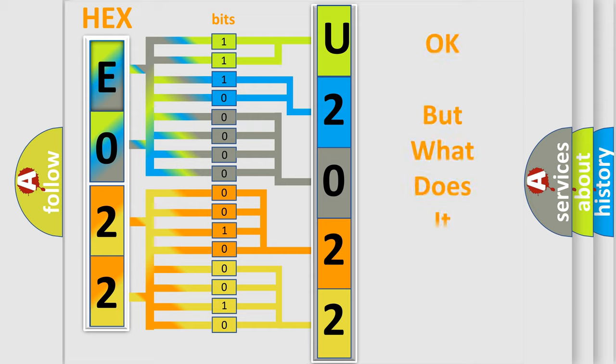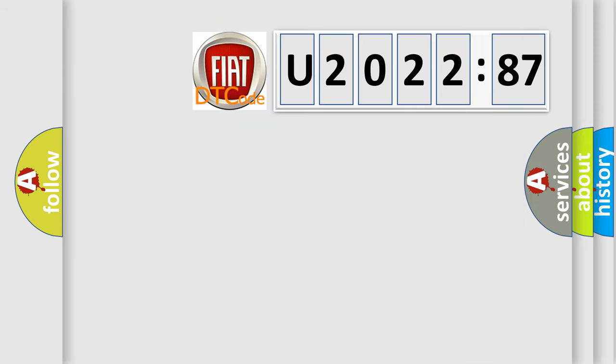The number itself does not make sense to us if we cannot assign information about what it actually expresses. So, what does the diagnostic trouble code U202287 interpret specifically for FIAT car manufacturers?